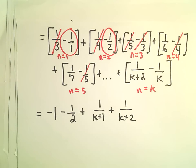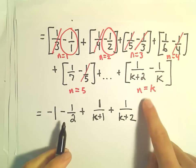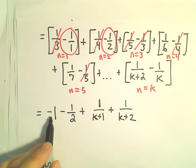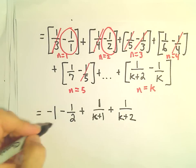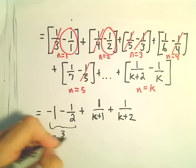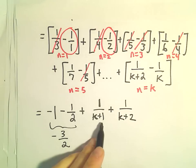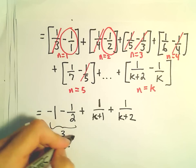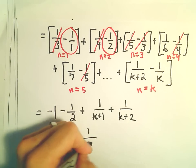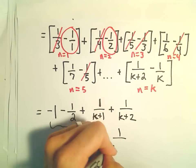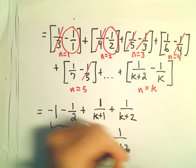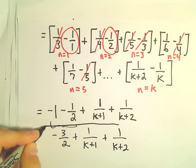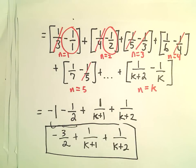So I claim generically, if we sum up to n equals k, we'll have negative 1 minus a half. Of course, we can combine this into negative 3 over 2. Then plus 1 over k plus 1, plus 1 over k plus 2, and that will be our sum. We can always get common denominators and all that stuff, but that is generically what we would be left with.